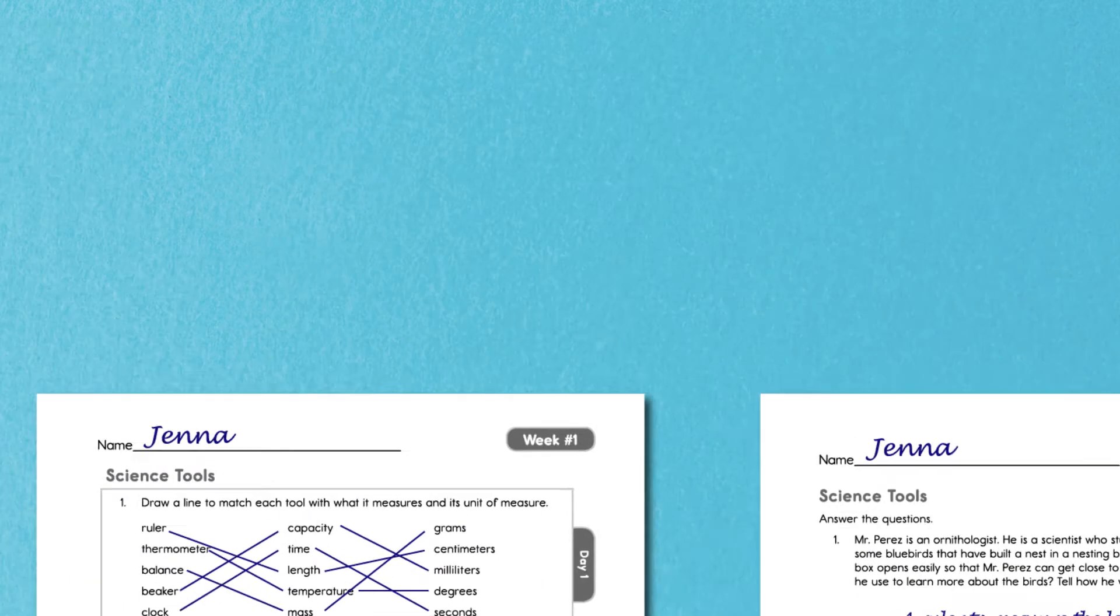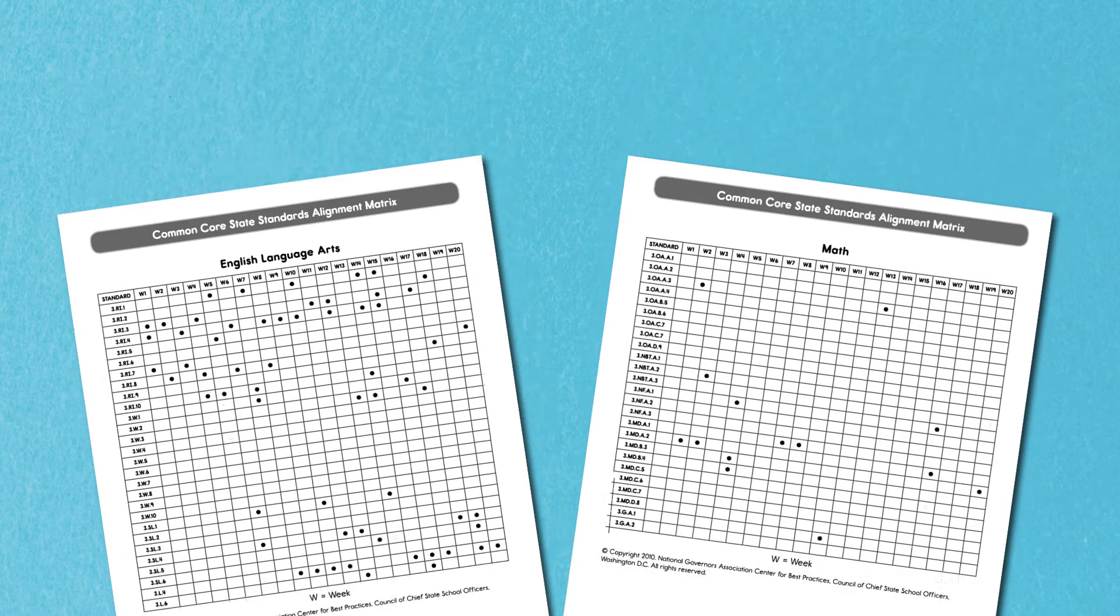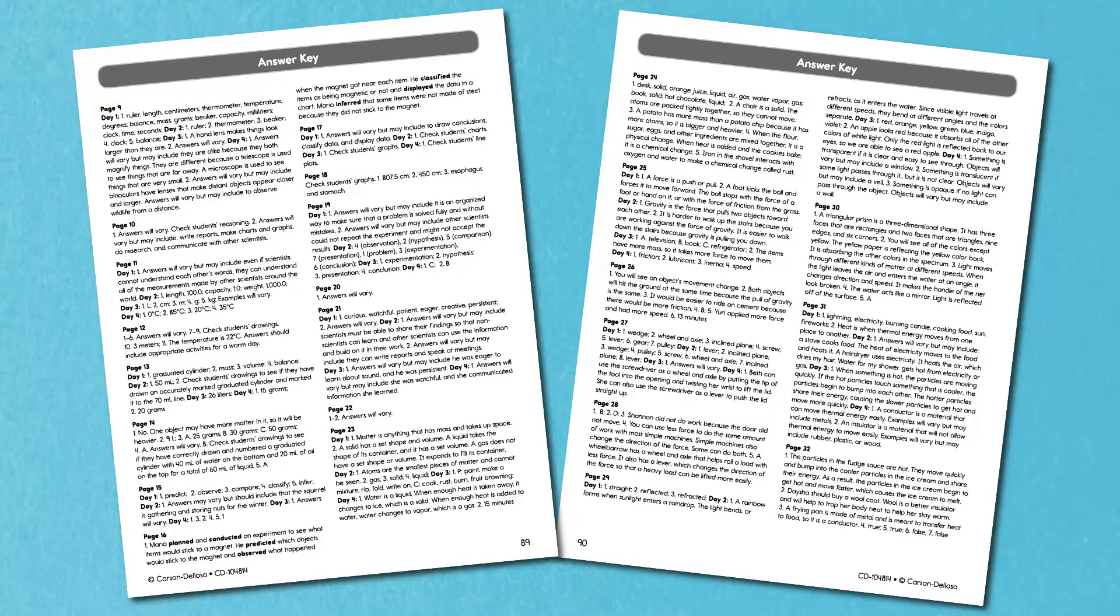Common Core Science for Today also includes a Common Core standards alignment matrix that shows the standards covered each week for easy planning and documentation. Included answer keys also make checking students' work quick and easy.